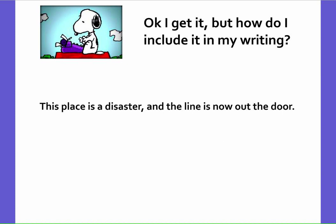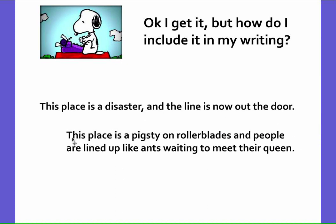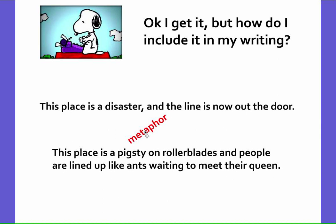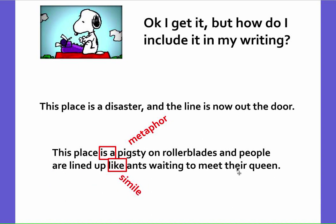Here's another example. Original sentence: this place is a disaster, and the line is now out the door. Here's how I make this sentence more exciting: this place is a pigsty on rollerblades, and people are lined up like ants waiting to meet their queen. I have two things happening here. First, I have a metaphor — 'this place is a pigsty' — using 'is a' to compare the place to a pigsty on rollerblades, without using 'like' or 'as.' Then I'm using the word 'like' to describe how the people are lined up like ants waiting to meet their queen.